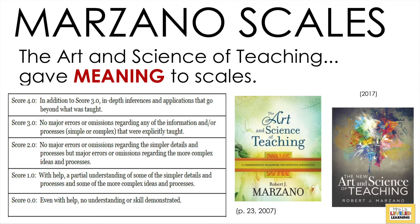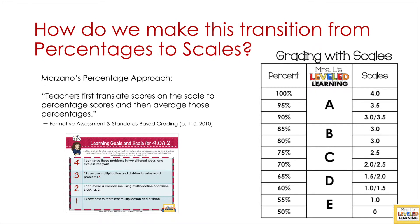How do we make the transition from percentages to scales? In Marzano's book, Formative Assessment and Standards-Based Grading, he offers several approaches for how to grade, create assessments, and assess growth over time — whether blending many standards for one subject or looking at growth over time for each objective. The simplest approach I found: teachers first translate scores on the scale to percentage scores, then average the percentages. If you look at the grading scale on the right, this is what my district used. It's suggestive, so a couple of the scale ranges overlap because every district has some flexibility to decide how they want to approach this.